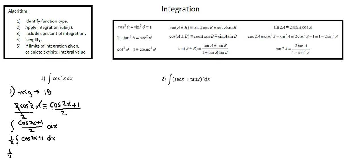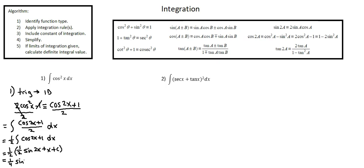We have 1/2 times the integral of cos 2x. The integral of the cosine function is sine. Our argument is 2x, and we want to multiply by 1 over the derivative of the inner function. The derivative of 2x is 2, so we multiply by 1/2. Plus 1 will integrate to plus x, and we add the constant of integration plus c. In our final simplification, distributing the 1/2: 1/2 × 1/2 sine 2x = 1/4 sine 2x, plus 1/2 × x = 1/2 x, plus c.